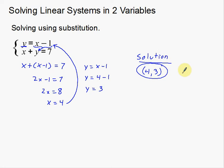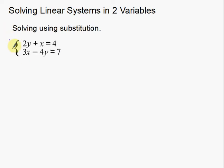That basically gives me a point where these two lines intersect. Or you can simply write that x equals 4 and y equals 3 — that's another way to write out the solution. So that's a quick, easy example of how to use substitution. I'm going to do one more example using substitution.